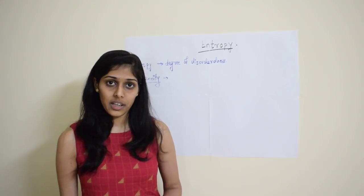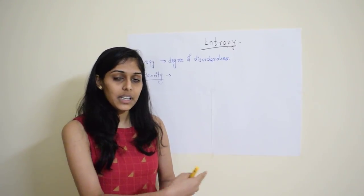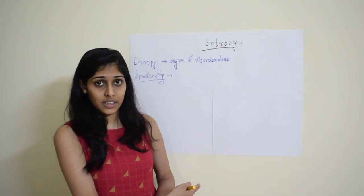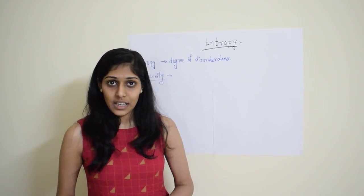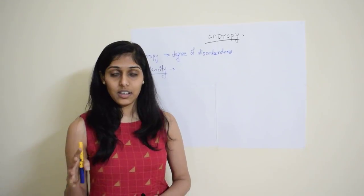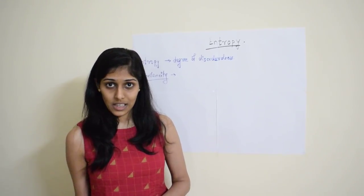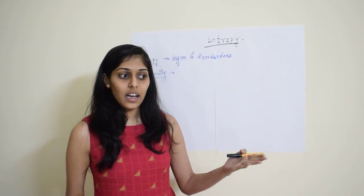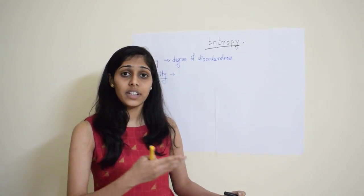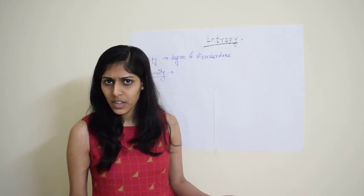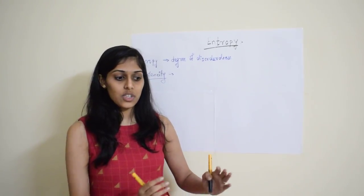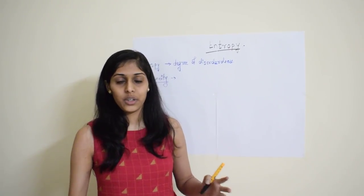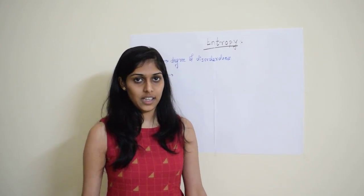The second law of thermodynamics has a corollary which states that all natural processes are spontaneous. For example, if I have milk and I want to convert it into curd, I do not have to do anything. It is just the natural process which drives it, and it gets converted into its product, which is curd in this case.